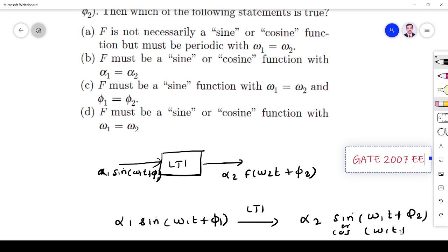So α₂ is the amplitude of the output, which may be same or different, but frequency must be the same. F must surely be sine or cosine with the same frequency ω₂, where ω₂ is the output frequency. ω₂ should be equal to ω₁. Then only the system is called an LTI system.